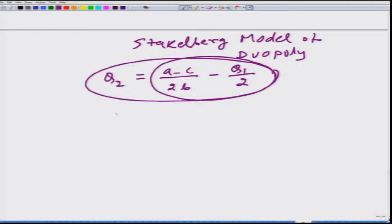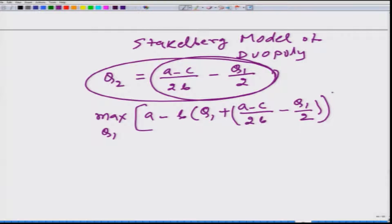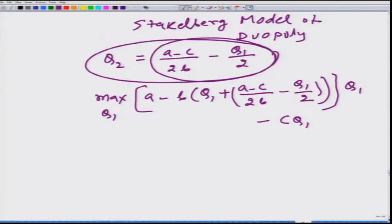So the firm one's profit maximization problem would be maximize with respect to Q1: [A minus B(Q1 plus Q2)] multiplied by Q1 minus CQ1, where Q2 equals (A minus C) divided by 2B minus Q1 by 2. And this is the optimization problem for the market leader in the Stackelberg problem.